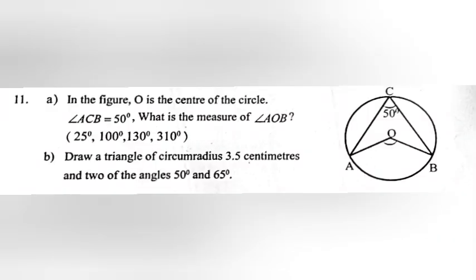Question 11, Part A: In the figure, O is the center of the circle. Angle ACB equals 50 degrees. What is the measure of angle AOB? Answer: 100 degrees. Part B: Draw a triangle with circumradius 3.5 cm and two of the angles 50 degrees and 65 degrees.